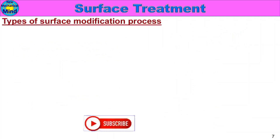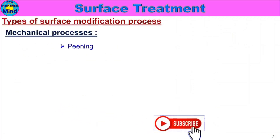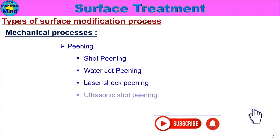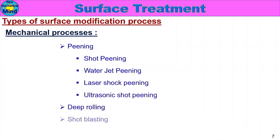Surface Treatment — types of surface modification process. Mechanical processes include: peening, shot peening, water jet peening, laser shock peening, ultrasonic shot peening, deep rolling, shot blasting, and explosive hardening. We will see each type of process.